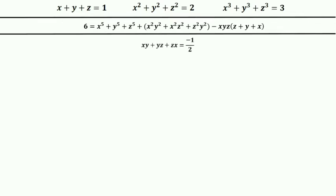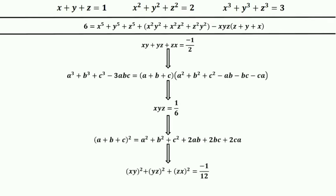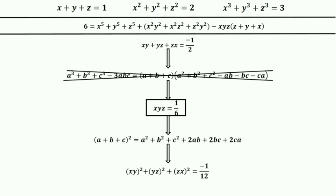In the first method we found the value of xy+yz+zx equals negative 1 by 2 using the (a+b+c)² identity, which is also used in the second method. So we can find xy+yz+zx using only the (a+b+c)² identity. And using this identity we found xyz equals 1 by 6. We also found (xy)²+(yz)²+(zx)² equals negative 1 by 12. Once we find xyz without the cube-sum identity, we can solve for our final answer.